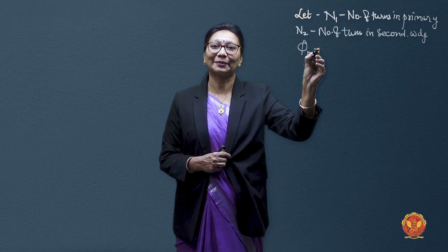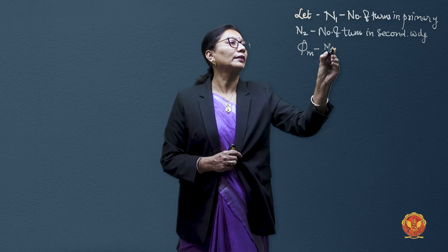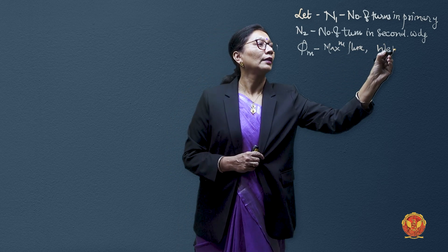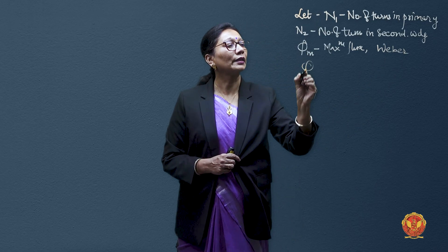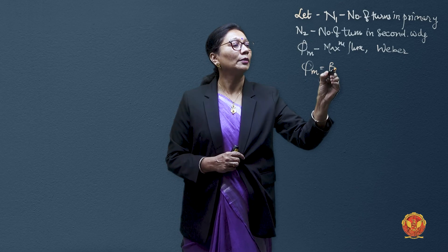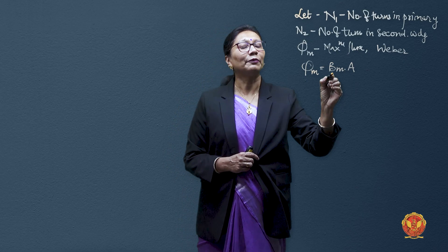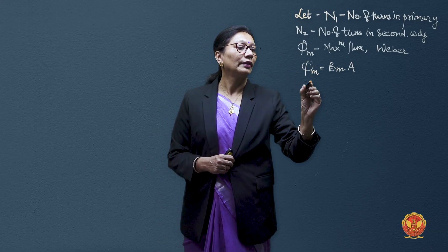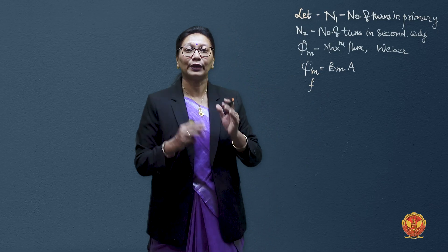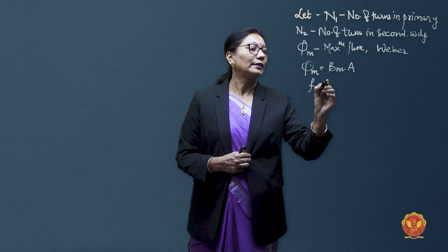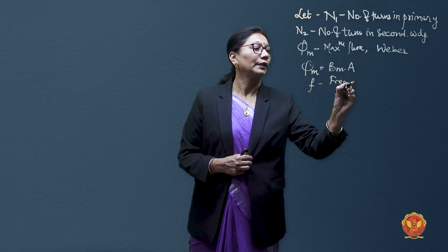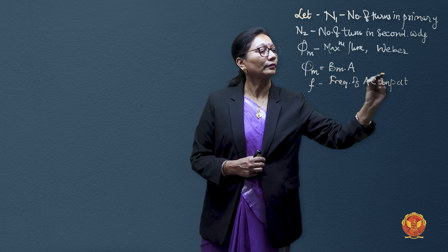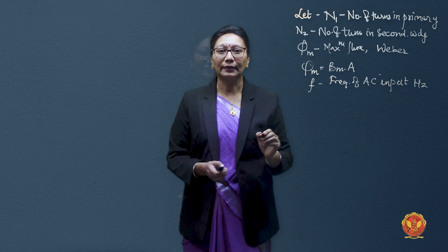Phi is the maximum flux set up in the core, with units of Weber. Phi m can be given by the expression Bm into A, where Bm is the maximum flux density in the core and A is the area of the core. Then comes the quantity frequency — frequency of AC input — and its unit is Hertz.